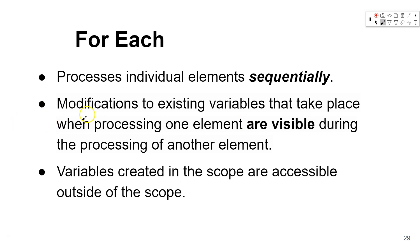In For Each, modifications to existing variables that take place when processing one element are visible during the processing of another element. Since we are processing data sequentially, before the For Each we create a variable with value zero, then go sequentially one by one over the elements and update the variable: the new value of the variable is the previous value plus the payload element.